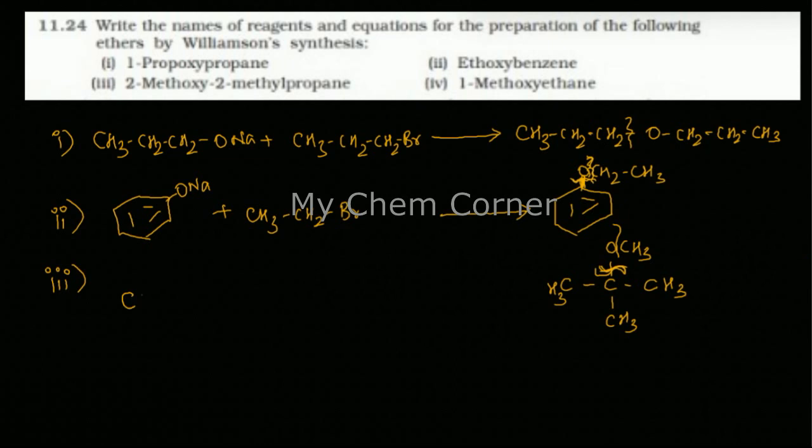So in that case we will only break the bond with the methyl group on top. So in that case you will get CH3-C(CH3)(CH3)-ONa plus CH3Br. So this way we will have the reaction forming in this case.